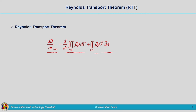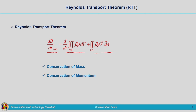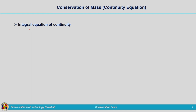Now we will make use of this theorem for the derivation of conservation of mass, conservation of momentum, and conservation of energy. Let us start with the derivation of conservation of mass by making use of Reynolds transport theorem — that is, we are going to derive the integral equation of continuity. Conservation of mass equation is also known as continuity equation. We commonly make use of the term continuity equation in hydrology; it is nothing but the mass conservation equation.